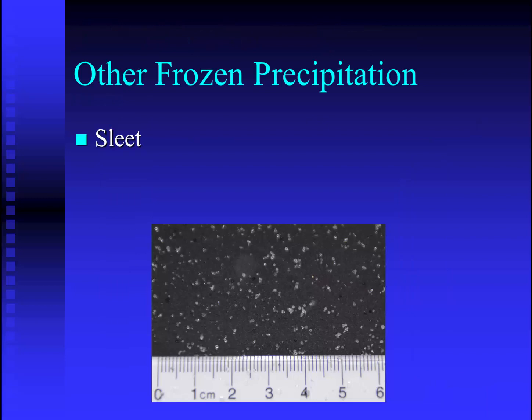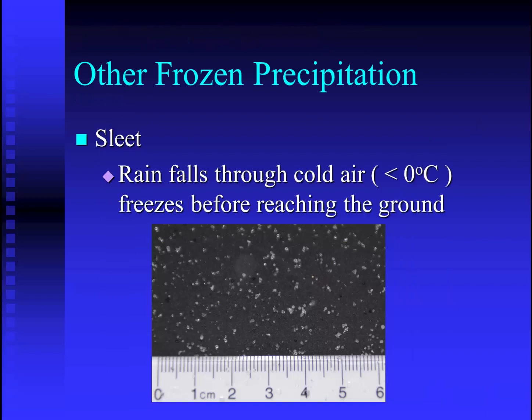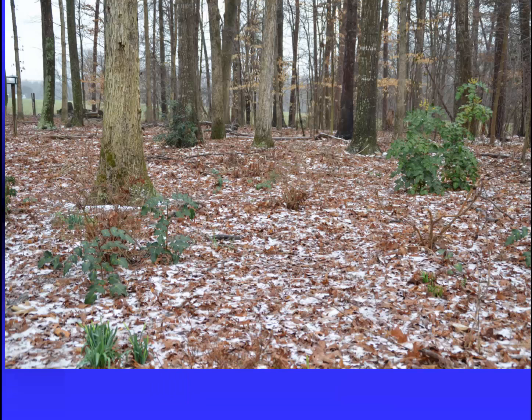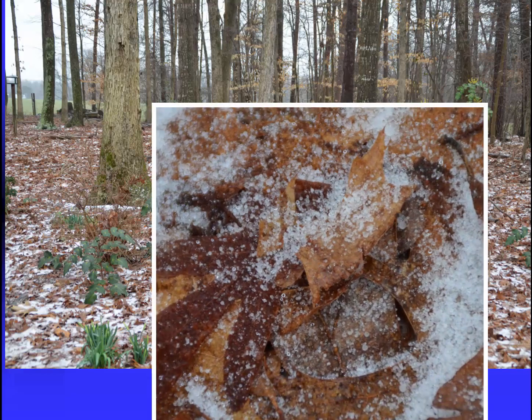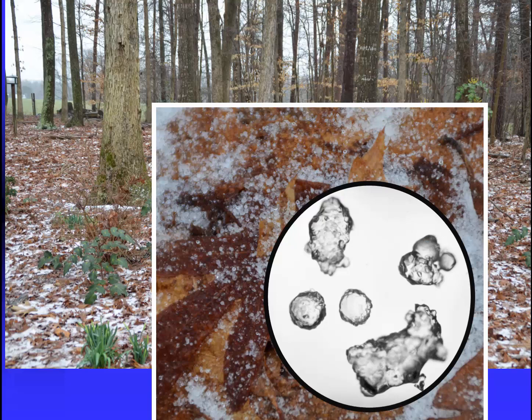Another type of frozen precipitation is sleet. When rain falls through cold air and freezes before it reaches the ground, the little droplets may actually freeze into spheres of ice. This was my backyard during a sleet storm one recent winter's day. Looking closer, you can see the little pellets of ice, and under a microscope you can see more of the details on the surface of these small pellets of ice.